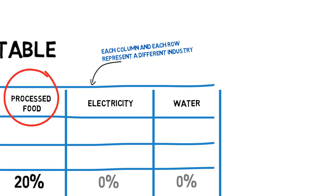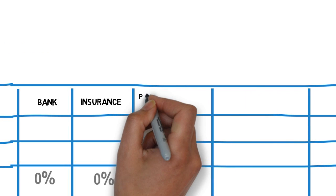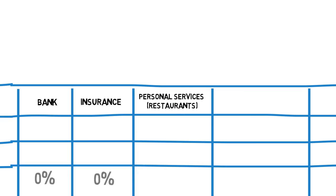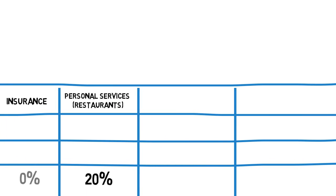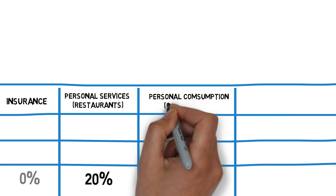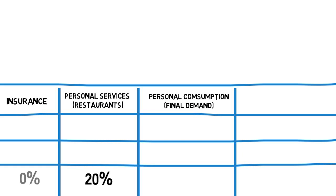Then we come to the service industries, business services like banks and insurance, so zeroes again. And then there's personal services like entertainment. There's a figure there because processed food is bought by restaurants and food vendors. Let's say they use 20% of the output. Then there's processed food bought and consumed directly by people. We call that final household demand. And it's often the biggest use. Let's say it's 50% of the total.